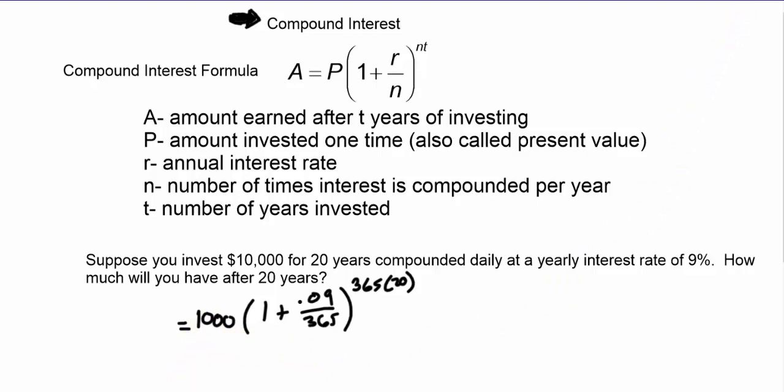You should come out with about sixty thousand four hundred eighty three dollars and five cents, right around there. So having that ten thousand dollars to invest for twenty years, you make forty thousand dollars.